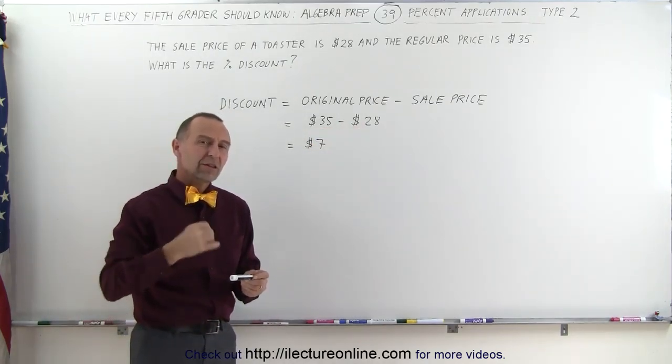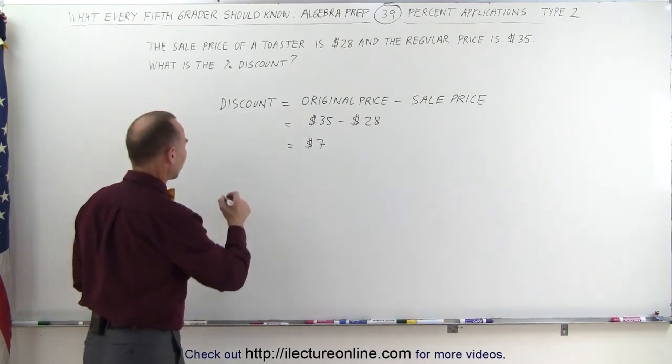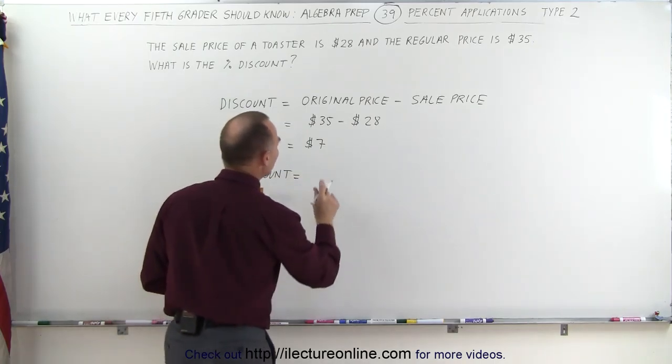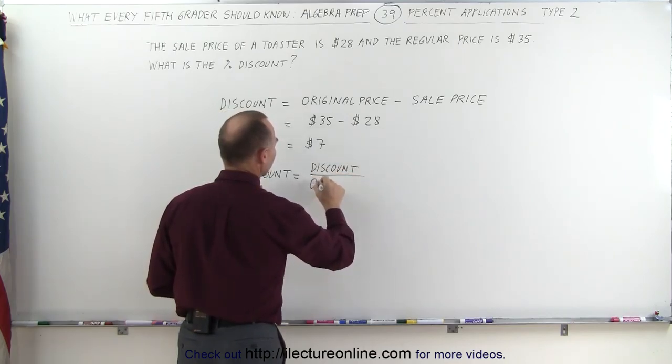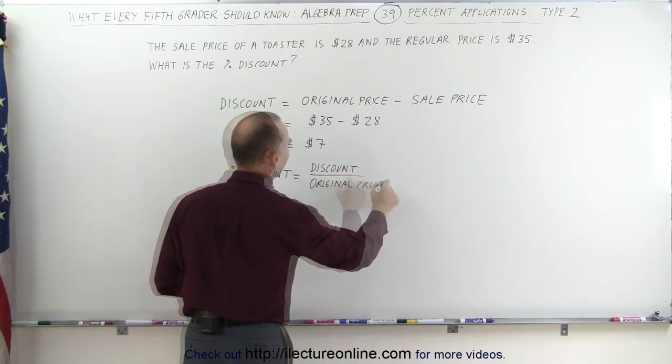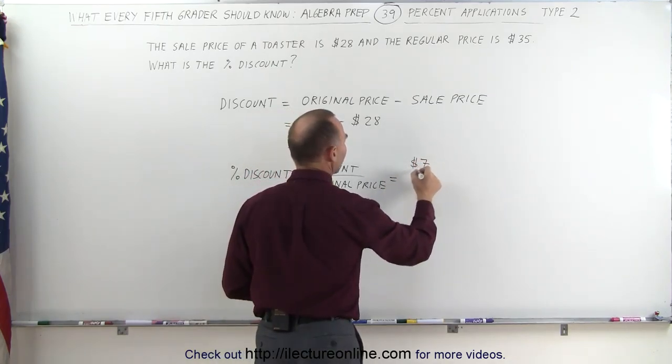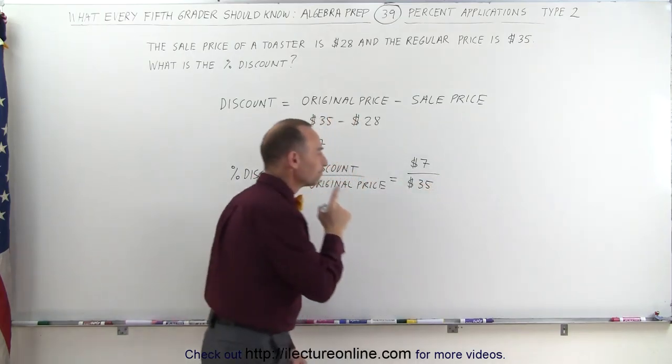So what percent discount did the person get that bought that toaster? It turns out that the percent discount is equal to the discount divided by the original price, which means the discount was $7 and the original price was $35.